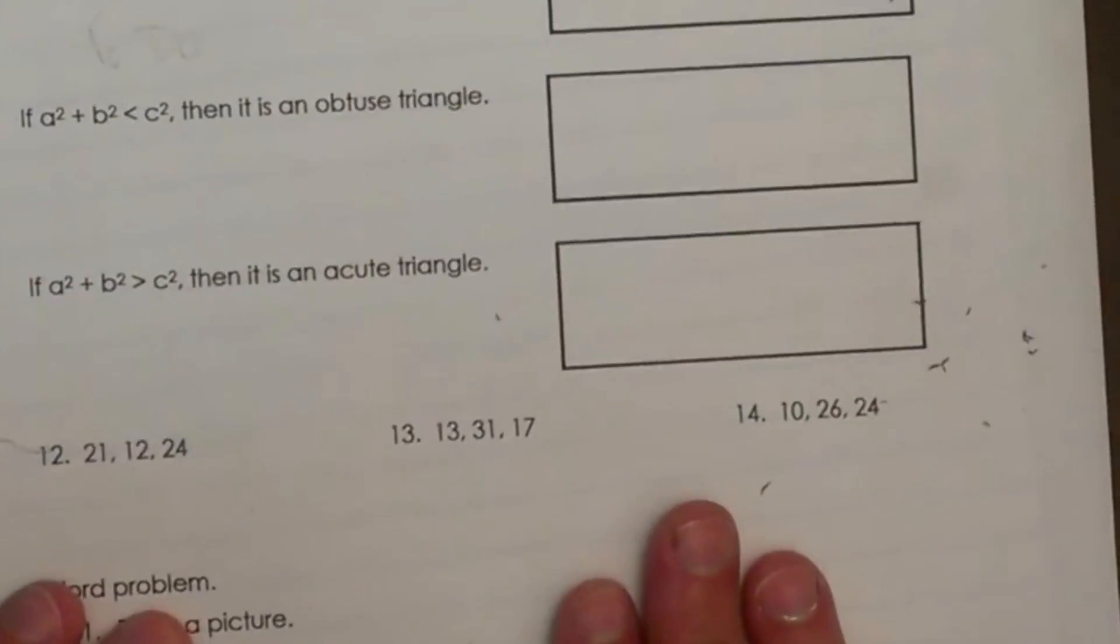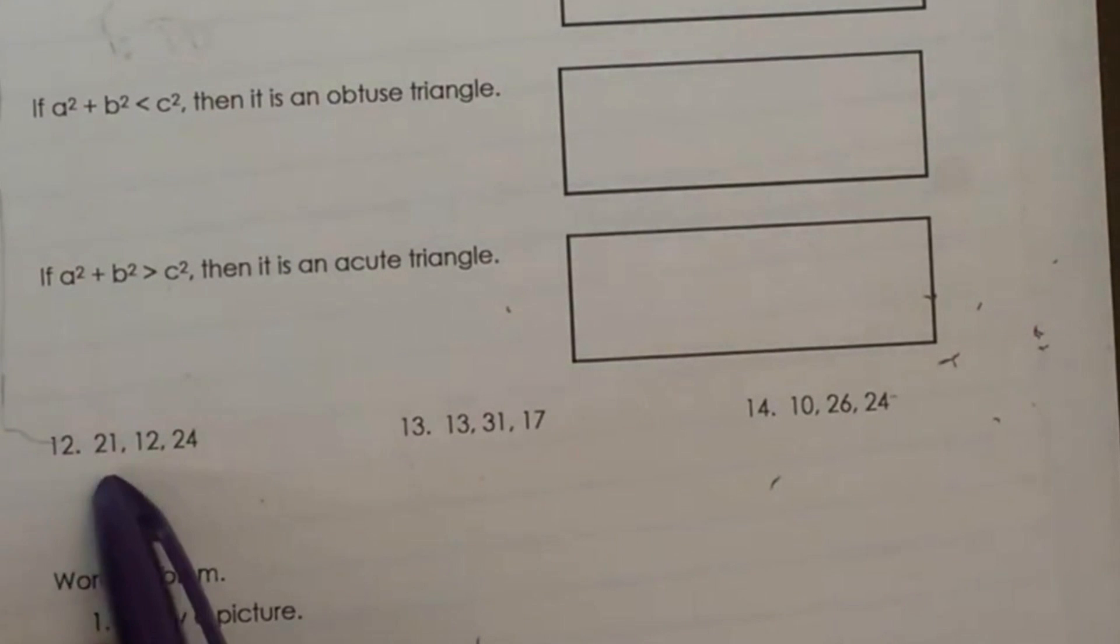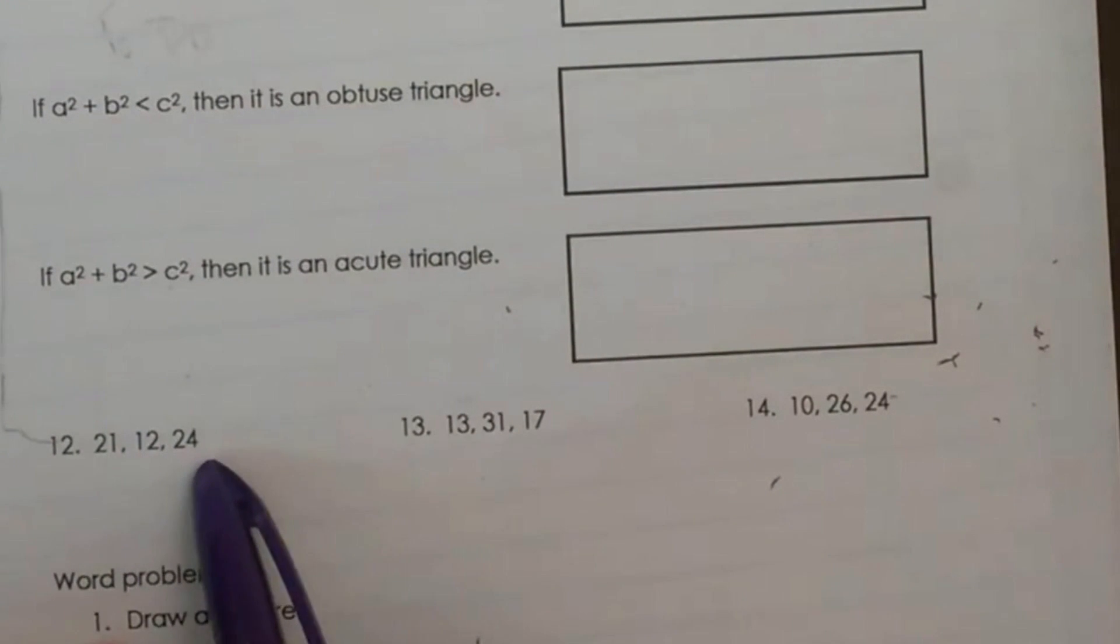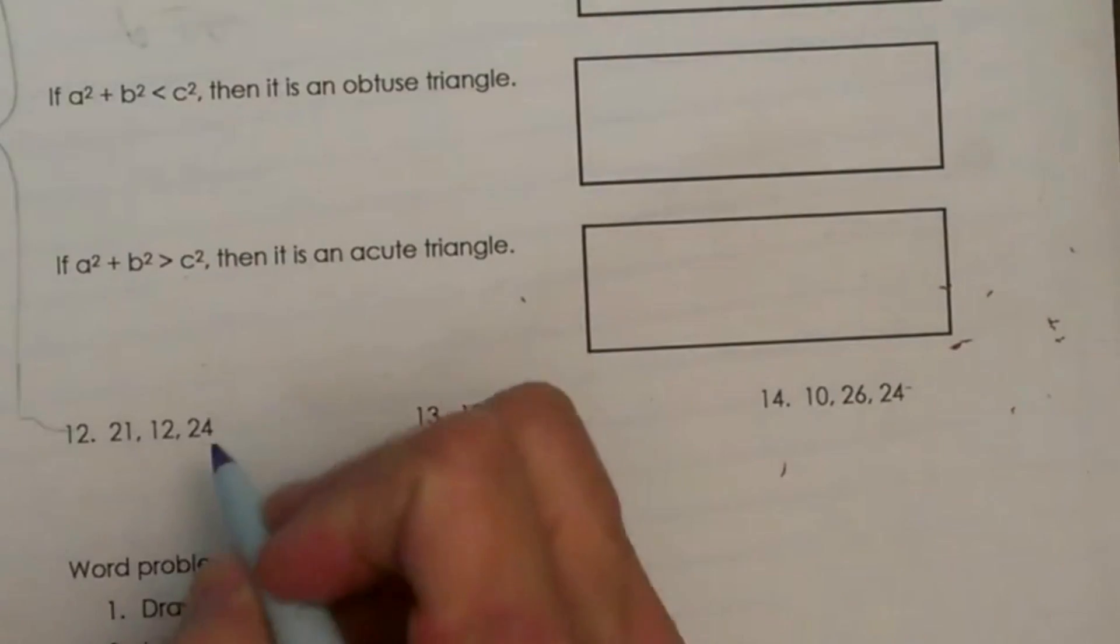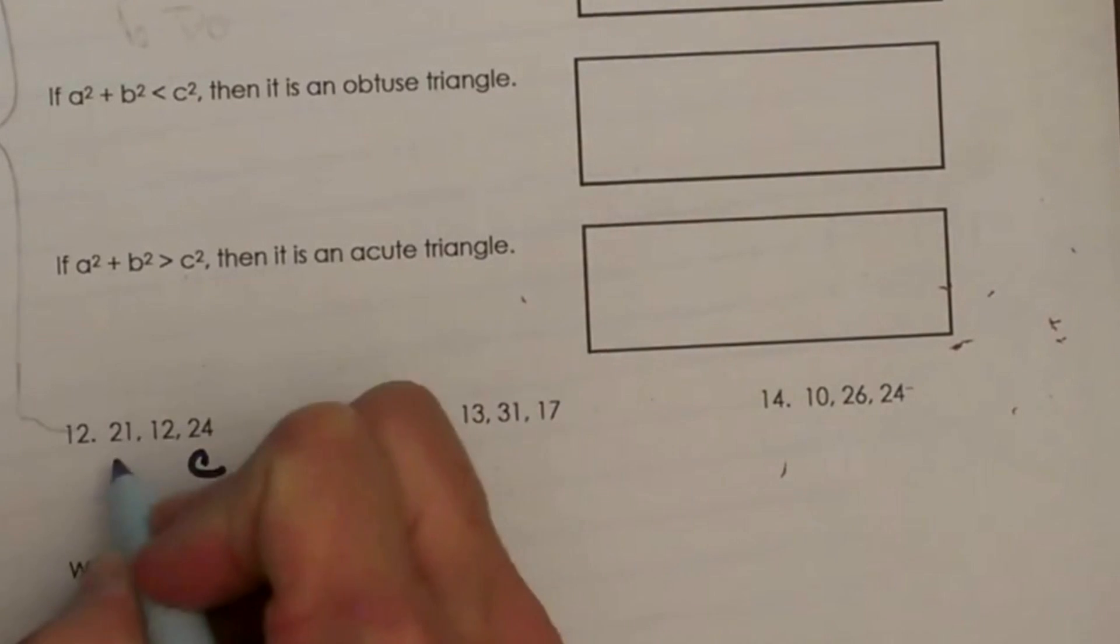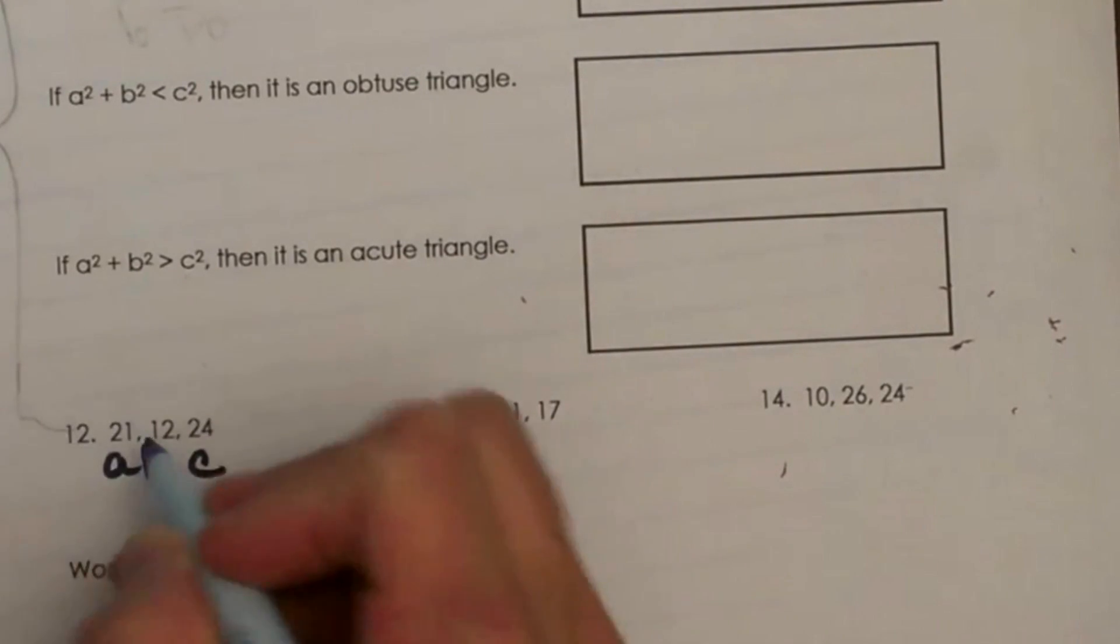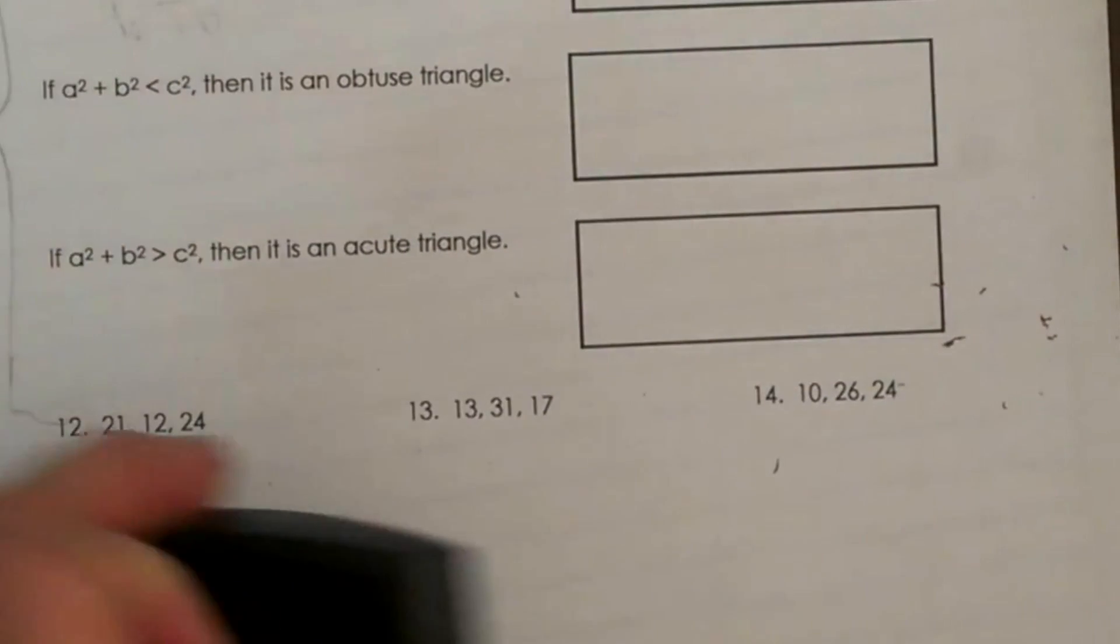So we have three practice problems down here to test. We have 21, 12, and 24. The first thing you need to identify is which one is C. Well, C is always the longest, so that means C is 24. That means A and B are interchangeable, so I will just make A 21 and B 12.